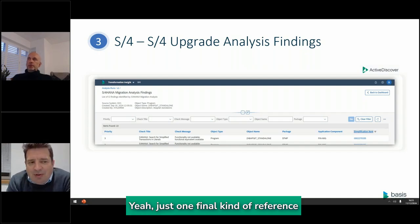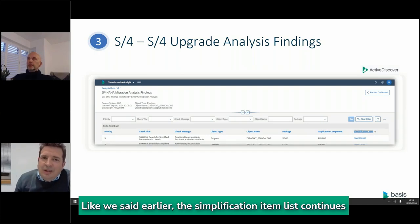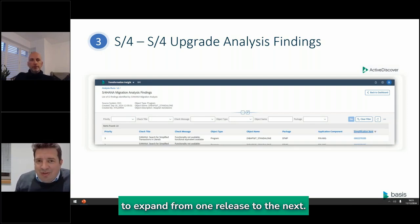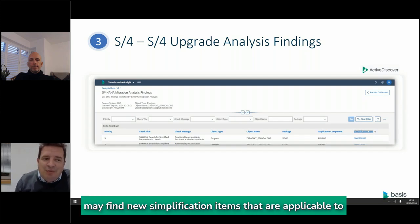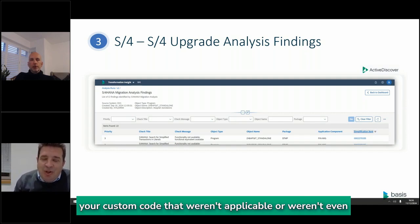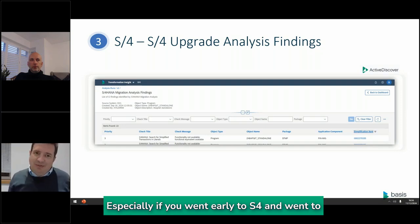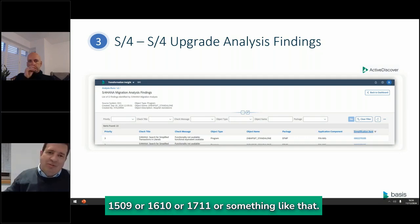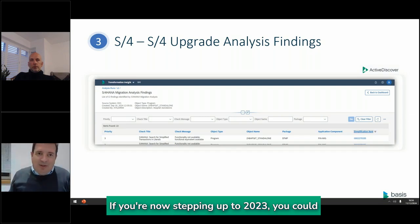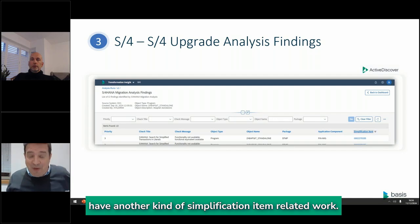Just one final reference back to transformation insight: the simplification item list continues to expand from one release to the next. So even in an S4-to-S4 upgrade, you may find new simplification items applicable to your custom code that weren't there when you originally upgraded — especially if you went early to S4 on releases like 1509, 1610, or 1711. Stepping up to 2023 could mean another round of simplification item related work.